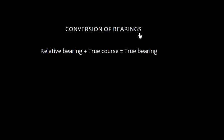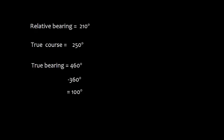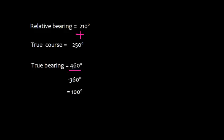Now let's talk about conversion of bearings. Relative bearing plus true course will give you true bearing. For example, suppose relative bearing is 210 degrees and the true course is 250 degrees, then true bearing is 210 plus 250, which is 460 degrees. However, a bearing cannot be more than 360 degrees, so we subtract 360 degrees, giving a true bearing of 100 degrees.